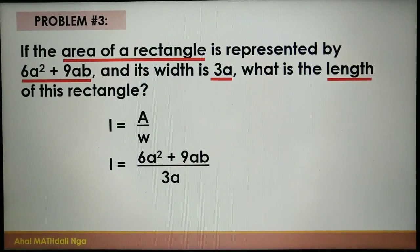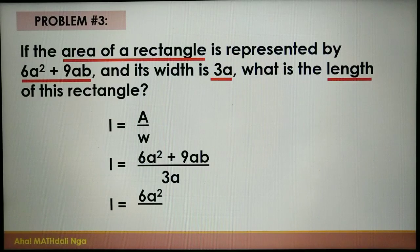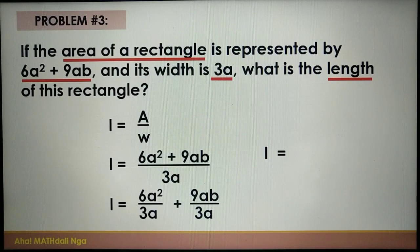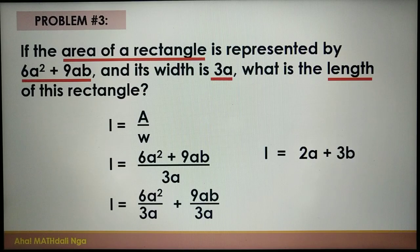As you can see, the divisor is a monomial, so we can distribute it to each term in the binomial. L equals 6a squared divided by 3a, plus 9ab divided by 3a. Simplifying: 6a squared divided by 3a equals 2a, and 9ab divided by 3a equals positive 3b. Therefore, the length of the rectangle is equal to 2a plus 3b.